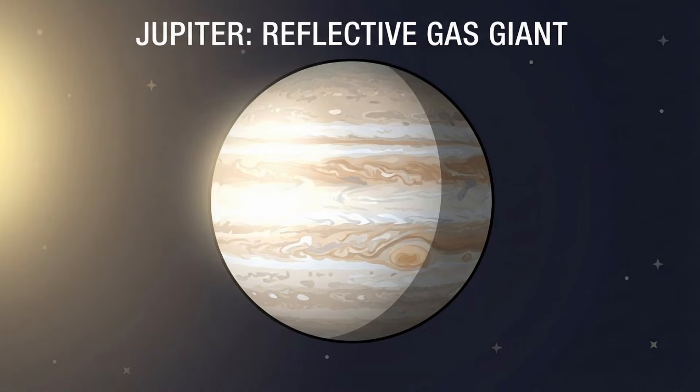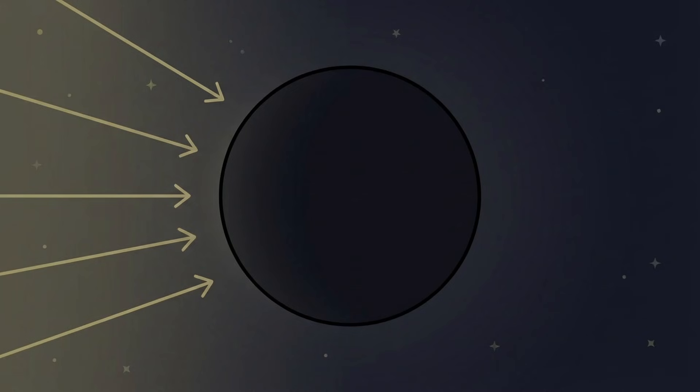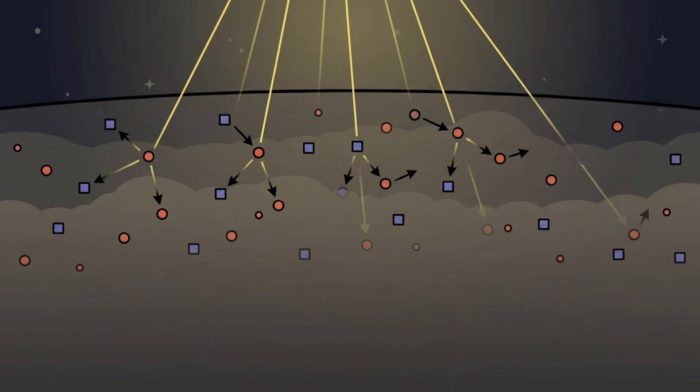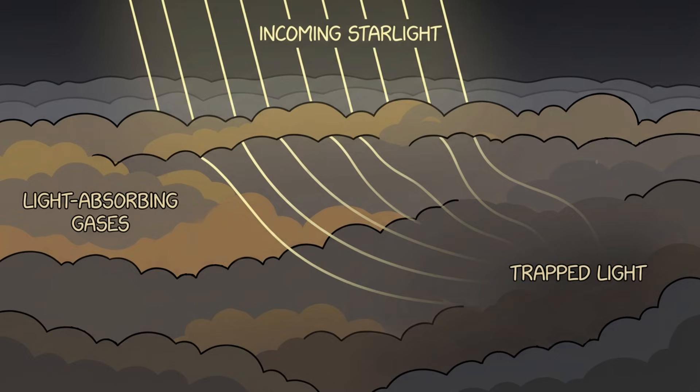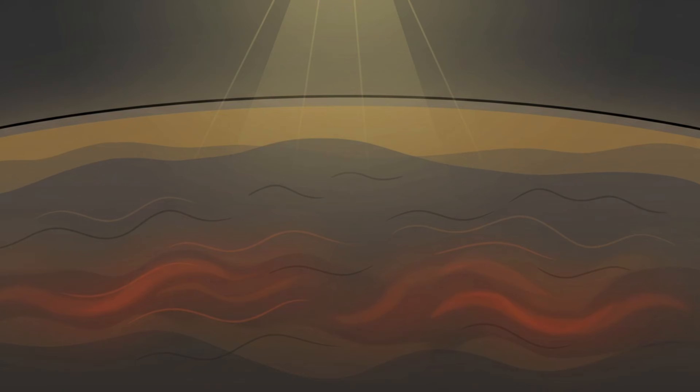The reason lies in its atmosphere. Unlike Jupiter, which is covered in bright, reflective clouds, TRES-2b appears to lack any reflective layer at all. Instead, its atmosphere likely contains light-absorbing gases, such as vaporized sodium and potassium. These elements trap incoming starlight rather than scattering it back into space. Heat is retained. Light is swallowed.